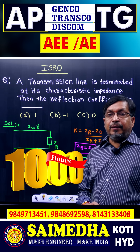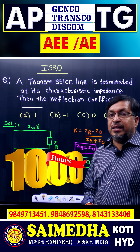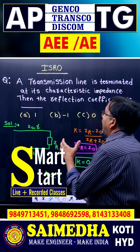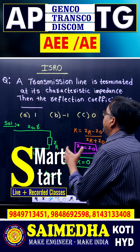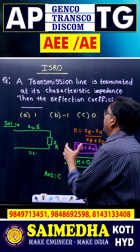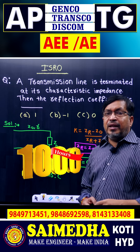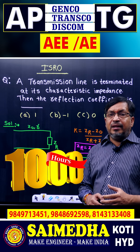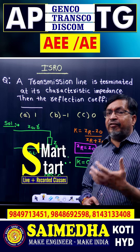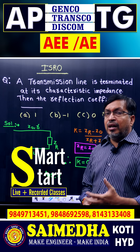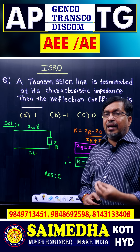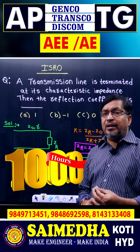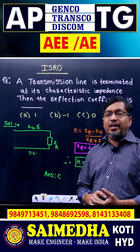Students, here I am explaining previous ISRO questions. A transmission line is terminated at its characteristic impedance — then what is the reflection coefficient? We know that when the transmission line is mismatched, a wave will be reflected from the load towards the source. To analyze transmission line power — transmitted power, received power — for everything, we need the reflection coefficient.